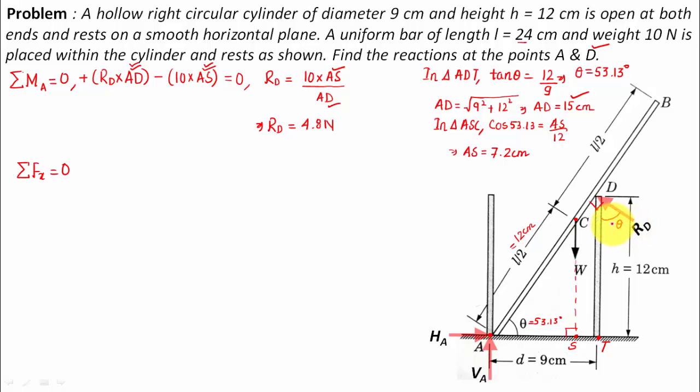So what we need to do is we need to resolve this RD force into its respective vertical and horizontal components. This is the RD force making an angle theta with this line over here, and hence here we'll have its cos component, that's RD cos 53.13. Here we'll have its sine component, RD sin 53.13.